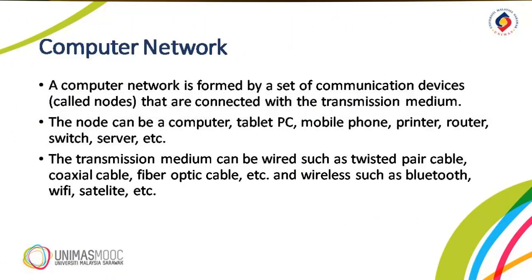Now we move on to the computer network. So what is a computer network? A computer network is formed by a set of communication devices — in this case, we call them nodes — that are connected with a transmission medium. A node can be a computer, a tablet PC, a mobile phone, printer, router, switch, server, and so on. The transmission medium, on the other hand, can be wired or wireless. For example, if it is wired, it can be a twisted pair cable, a coaxial cable, or a fiber optic cable. If it is wireless, it can be Bluetooth, Wi-Fi, satellite, and so on.